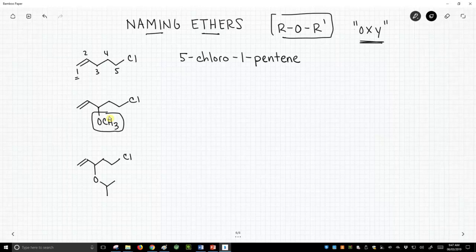For our purposes, ethers are very low priority groups, so the alkene is still the high priority group, and the longest carbon chain that contains the alkene is still 5 carbons long. This is still going to be a pentene, a 1-pentene, and that pentene is still going to have a 5-chloro group. But how do we handle this ether?